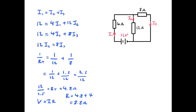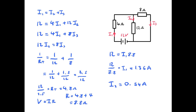Now we're going to apply V equals IR. We know that 12 equals I1 times 8.8, so I1 is equal to 1.36 amps. We can substitute our value for I1 into our equations and find that I2 is 0.54 amps and I3 is 0.82 amps.